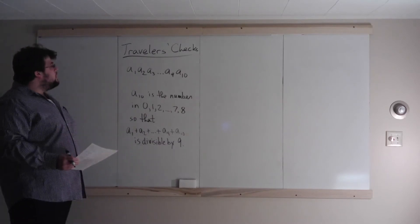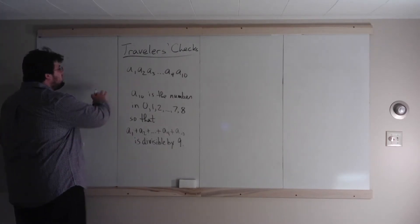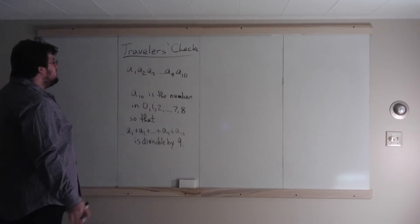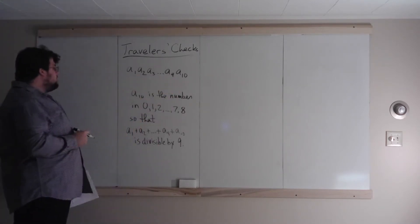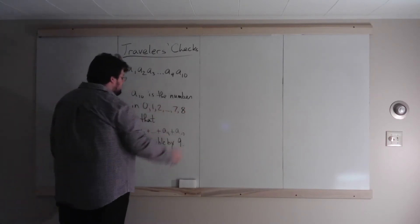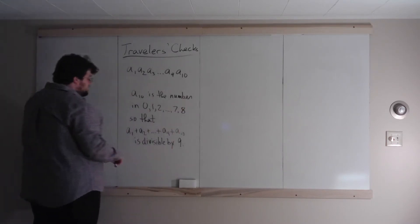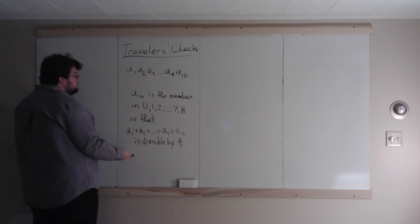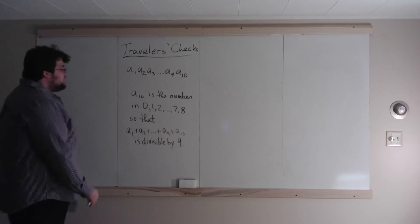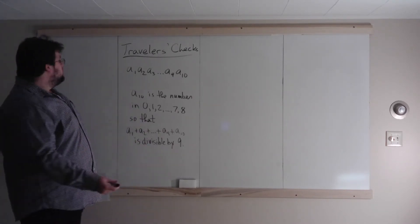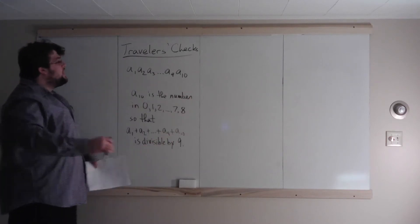The next identification number we'll look at is the number on traveler's checks. A traveler's check has a 10-digit number on it, called A1 through A10. Again, the last one is going to be the check digit. The formula: the check digit is the whole number between 0 and 8 such that A1 plus A2 all the way through A10 is divisible by 9. On the money order we were only adding the first digits; now we want the entire sum to be divisible by 9.